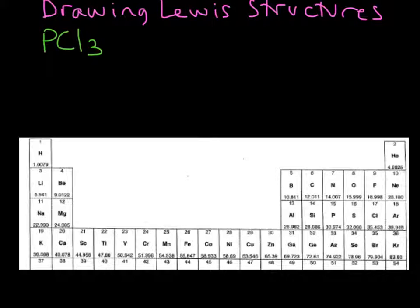Phosphorus contributes five valence electrons. It's in group five. We have three chlorine atoms, and each one is going to contribute seven electrons. Chlorine is in group seven, so it contributes seven valence electrons. When we add those up, we're going to end up with 26 valence electrons.